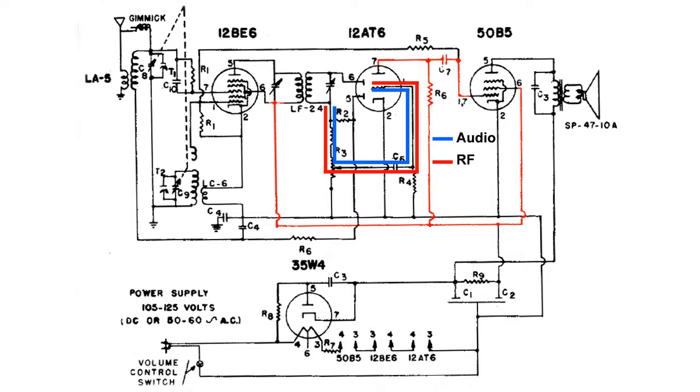And it's going to amplify the RF. And at the output of the 50B5, that RF is going to kind of get bunched up there because it cannot go through that audio transformer.